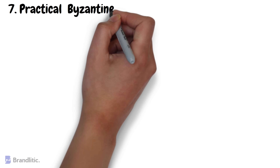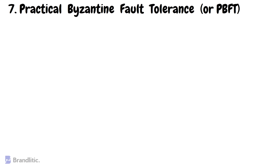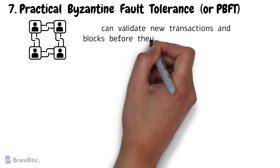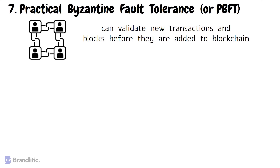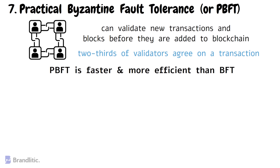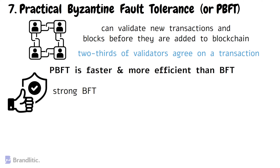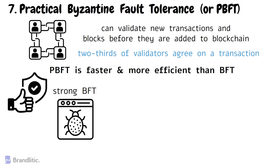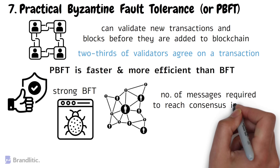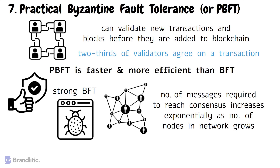Number seven: Practical Byzantine Fault Tolerance, or PBFT. PBFT is a variant of BFT and ensures that all nodes in the network have a copy of the blockchain and can validate new transactions and blocks before they are added. A consensus is reached if two-thirds of the validators in the network agree on the transaction. PBFT is faster and more efficient than BFT, but requires a certain level of trust among validators. One main advantage of PBFT is its strong Byzantine fault tolerance, meaning it can tolerate a large number of faulty or malicious nodes. A key drawback is that PBFT is not well-suited for networks with a large number of nodes, as the number of messages required to reach consensus increases exponentially as the network grows.